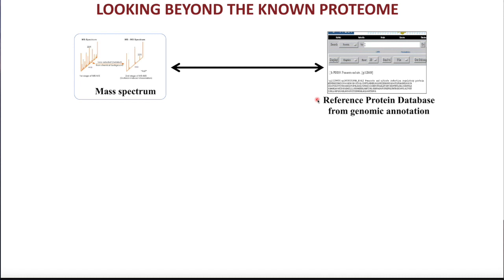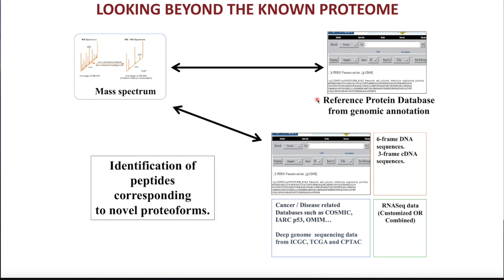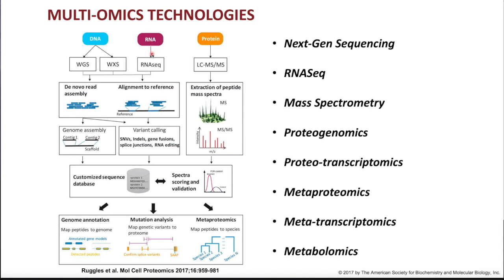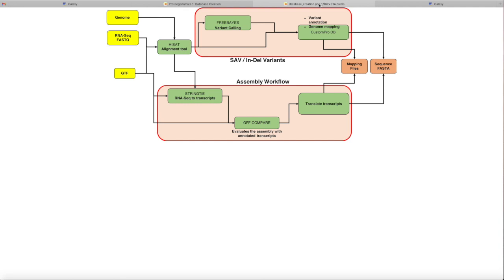Often we compare spectra against a reference protein database, but often we want to include novel proteoforms that wouldn't be in a reference. In proteogenomics, we use next generation sequencing and variant analysis of those sequences to produce putative proteins that we can add to make a customized protein database. There are numerous methods for identifying novel proteins from sequencing data. We will look for small amino acid variants and also novel isoforms.